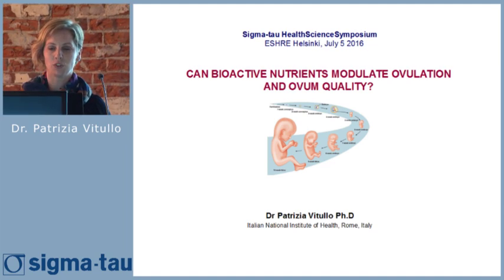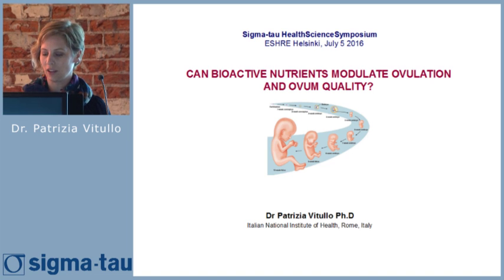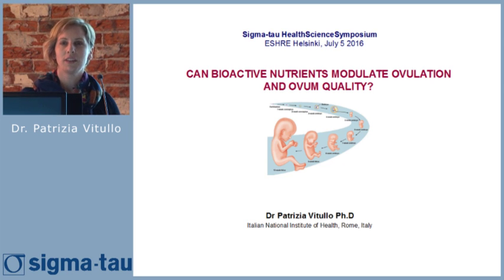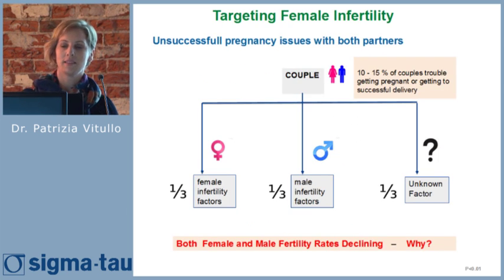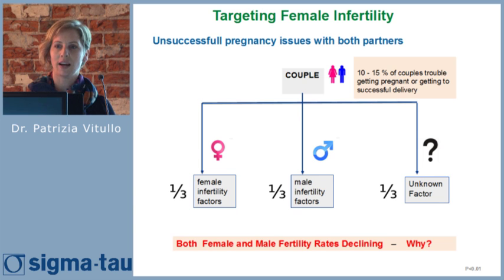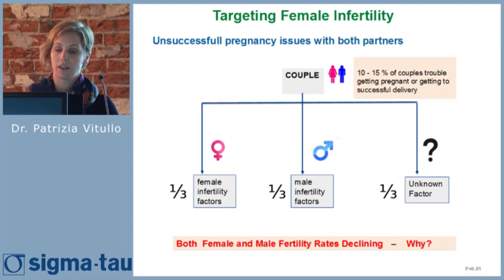I am talking about the role of carnitine and micronutrients in the ovulation process. Infertility is defined as the failure to conceive a recognized pregnancy after 12 months of unprotected intercourse.